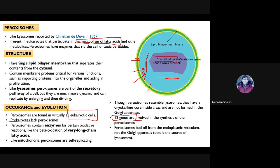In eukaryotic cells, peroxisomes mainly deal with beta-oxidation to initiate the breakdown of very long chain fatty acids. Comparing their ability to replicate, they are self-replicating just like mitochondria. However, they differ from mitochondria in not having DNA and not having ribosomes.